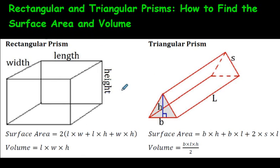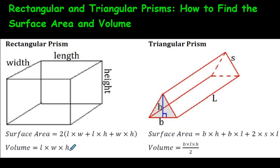Here's some more information including formulas on how to deal with this. On the left we have a rectangular prism with a width, a length, and a height. Using those three values, you can use the formulas to find surface area or volume. Volume is by far easier — you just go length times width times height and multiply those three numbers together.